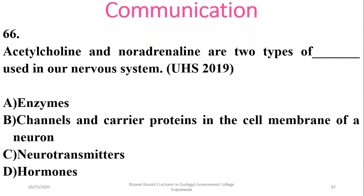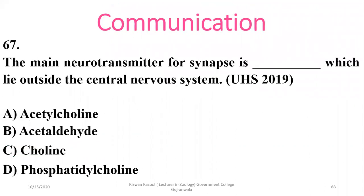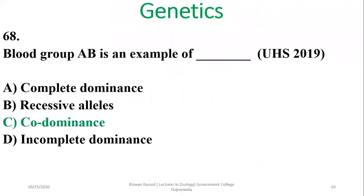Question 67: Acetylcholine and noradrenaline are two types of neurotransmitters commonly used in the nervous system. The major neurotransmitter for the synapse is acetylcholine. Alpha is the right option.